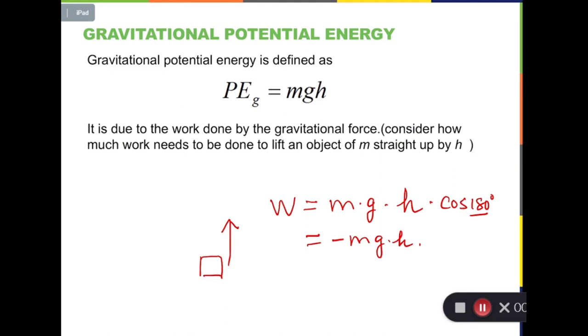And that energy is called gravitational potential energy. This gravitational potential energy is defined as the mass of object times g, which is the acceleration due to gravity, which on earth is average 9.8 meters per second squared. And h is the height that has been gained by the box over the uplifting process.